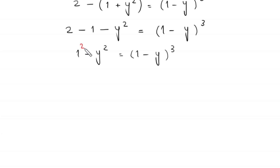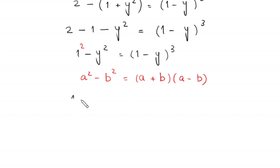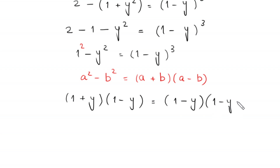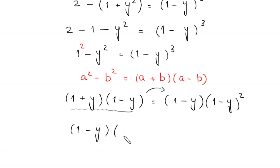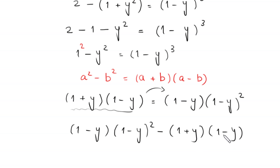The left side, 1 minus y squared, is the same as 1 squared minus y squared. Using the algebraic identity a squared minus b squared equals a plus b times a minus b, this becomes 1 plus y times 1 minus y. The right side, 1 minus y whole cubed, can be written as 1 minus y times 1 minus y whole squared. Moving 1 plus y times 1 minus y to the right hand side gives 1 minus y times 1 minus y whole squared minus 1 plus y times 1 minus y is equal to 0.